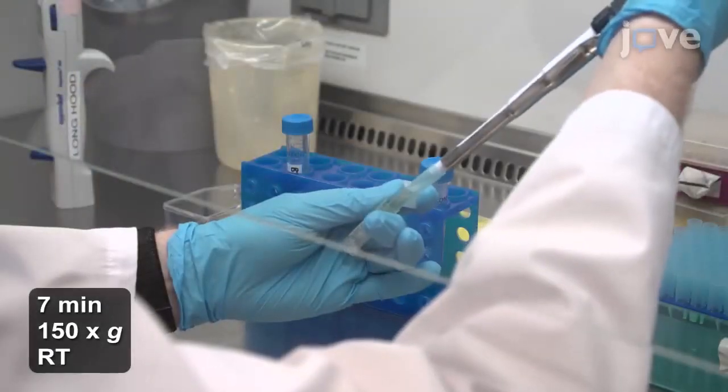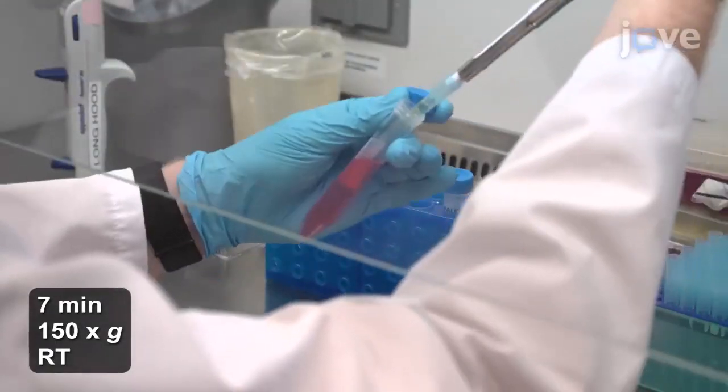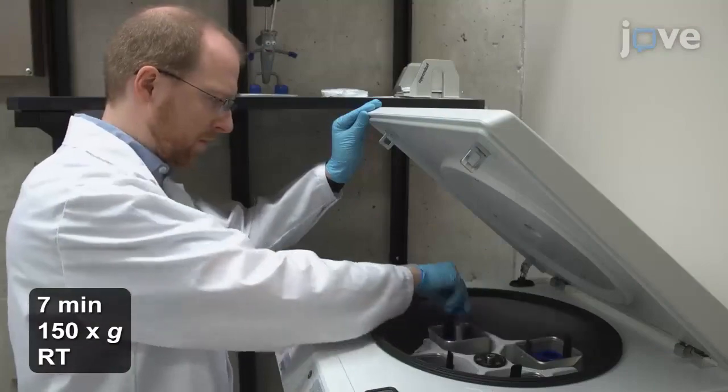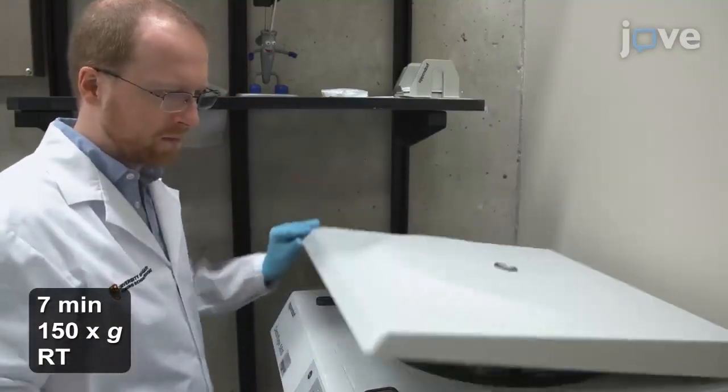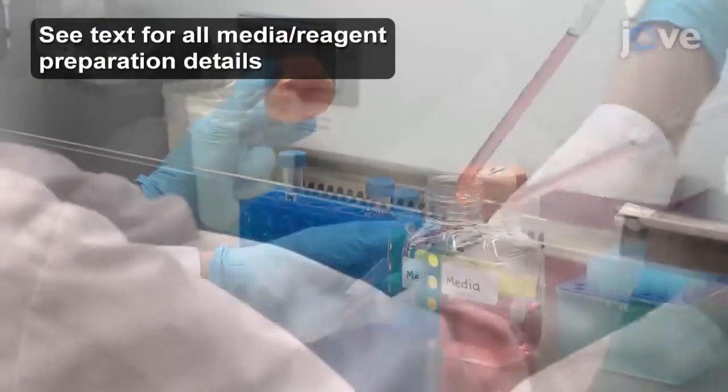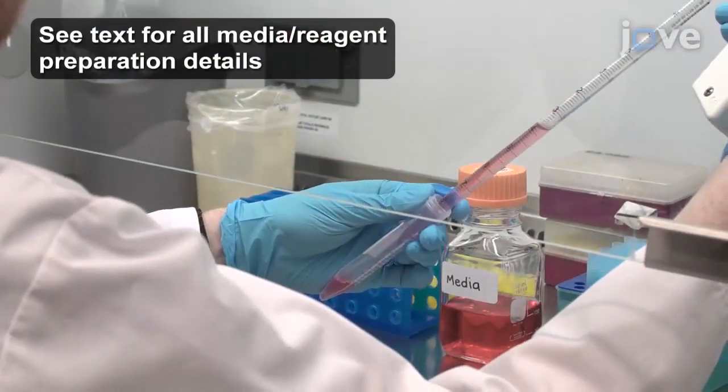Dilute the thawed cells in 10 mL of media in a 15 mL conical tube for centrifugation and re-suspend the BTSC pellet in 8 mL of complete media.